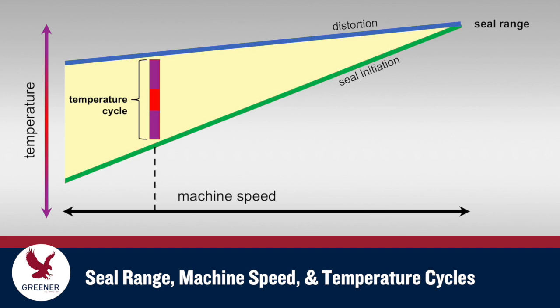Maximum production speeds are limited by the seal range of the packaging material, which must accommodate the temperature cycle of the sealing jaws. For high-speed applications, film suppliers can provide materials with lower seal initiation temperatures that increase machine speed potentials, but these materials are usually more costly.